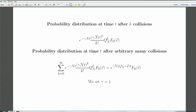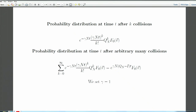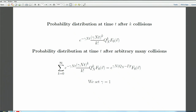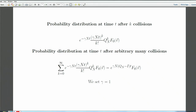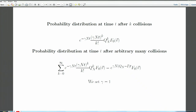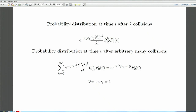The probability distribution at time t after k collisions is given by the Poisson factor. Summing over all possible numbers of collisions, everything works out beautifully: we obtain the exponential of the operator Q_n - 1. So the Kac model is just the study of this time evolution — setting γ = 1 as a choice of time unit — and the story is the study of this operator, which looks exceedingly simple.